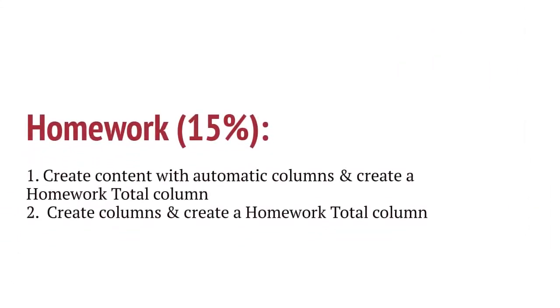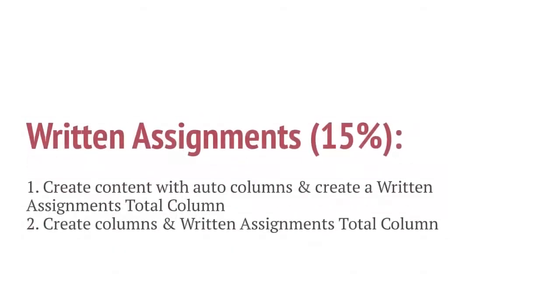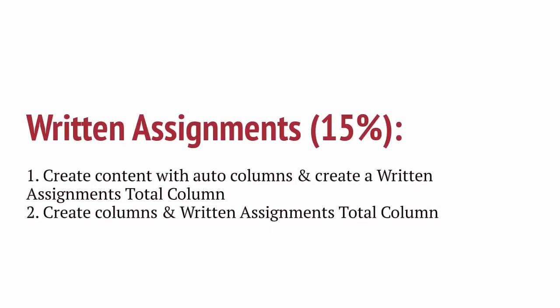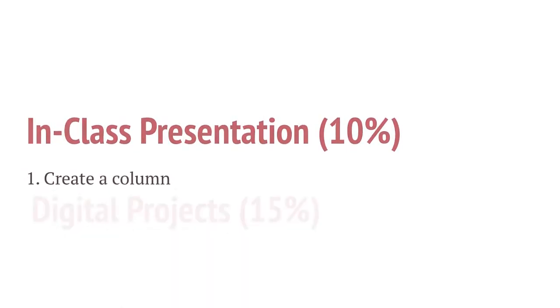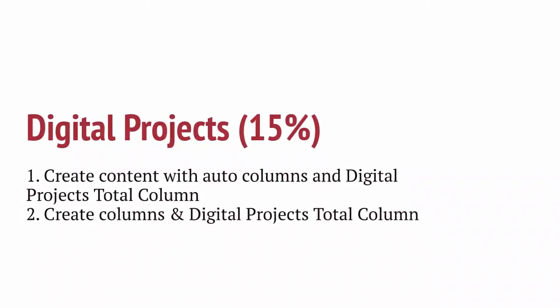For the Homework category, create Blackboard or Publisher Content that creates automatic columns and create a Homework Total Column, or create your own columns and create a Homework Total Column. For the Written Assignments category, the same options are applicable: create content with automatic columns and create a Written Assignments Total Column, or create your own columns and a Written Assignments Total Column. For the in-class presentation, since it is outside of Blackboard, create a column. For Digital Projects, you can create content with automatic columns and create a Digital Projects Total Column, or create your own columns for each project and create a Digital Projects Total Column.